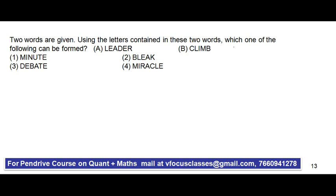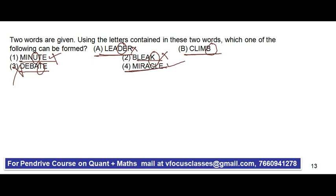Next problem: two words are given — LEADER and CLAIM. Using the letters contained in these two words, which one of the following can be formed? The first option MINUTE contains U, which is not in LEADER or CLAIM. The second option BLEAK contains K, which is not in either word. The third option DEBATE contains T, which is not available. So obviously the fourth option is our answer, as it can be formed from the available letters.